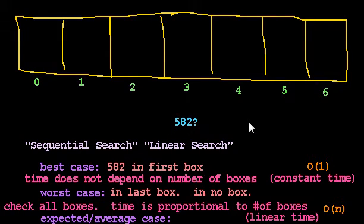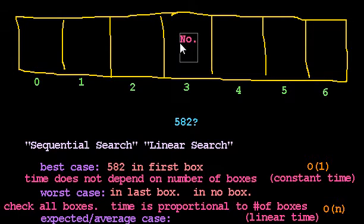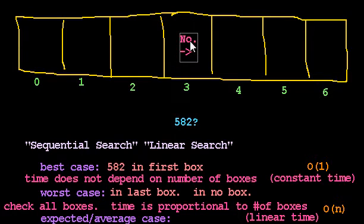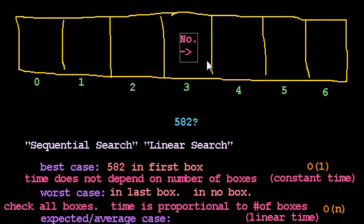We were wondering if we could do better if we had some hints — so that if we looked in box 3, and it turns out box 3 is a good one to start with if we have such hints. If we look in box 3 and the answer is that no, that box doesn't contain 582, but if there is a box that contains 582, it would be somewhere to the right. Using these hints, we could find whether 582 is there or not much, much faster — although we don't know exactly how much faster just yet.